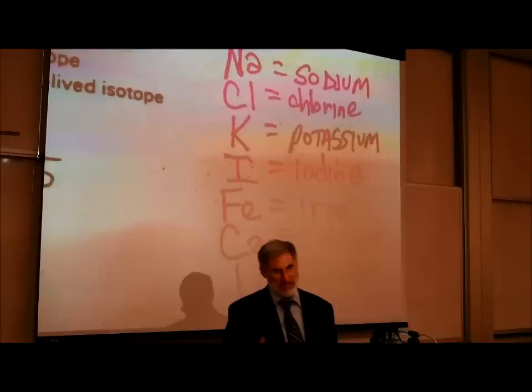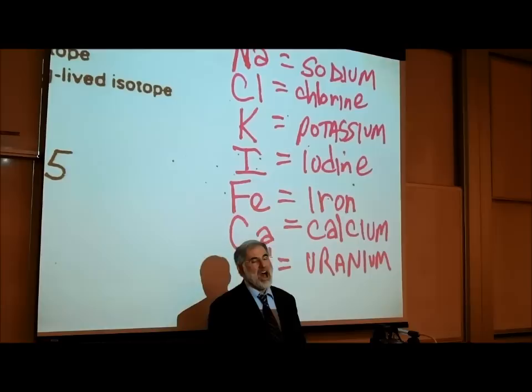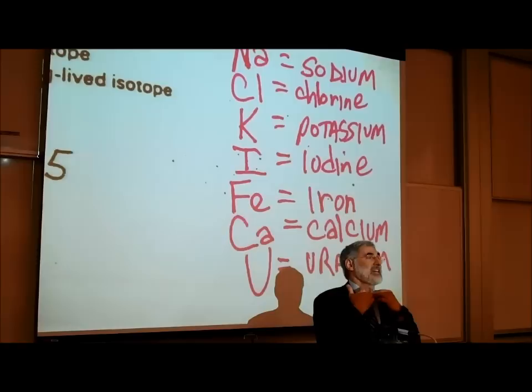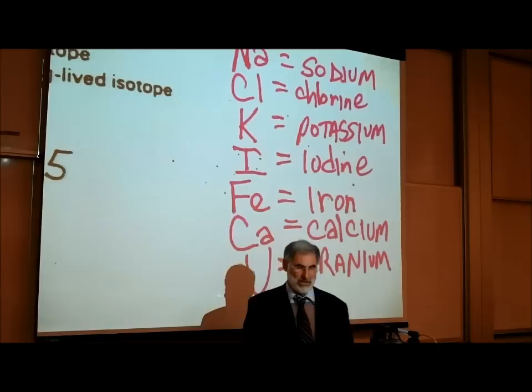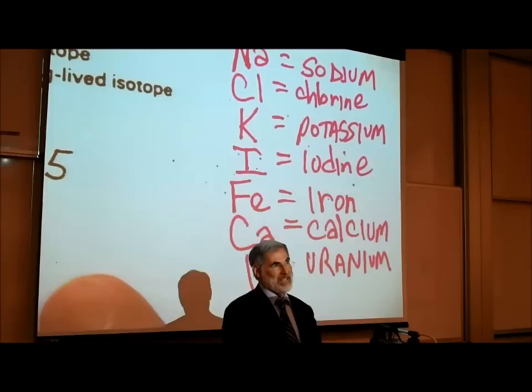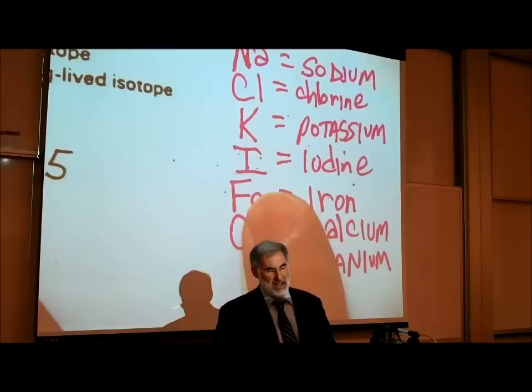Another one you need to know is capital I for iodine. We're going to learn that we need iodine in order to make the thyroid hormone thyroxine. After all, there are more than 90 elements, but I've given you about 13 to know.